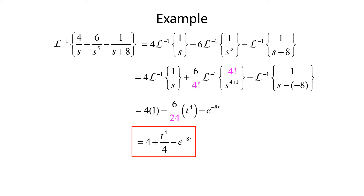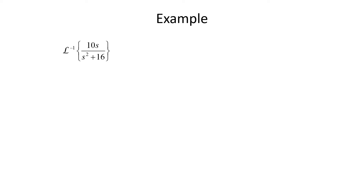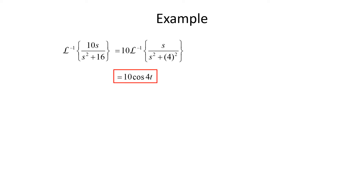Simplifying, we get 4 + t⁴/4 − e^(−8t). For one more example, we have 10s/(s²+16). We pull the 10 outside: 10 times the inverse Laplace of s/(s²+16). We rewrite 16 as 4², giving s/(s²+4²), which matches the cosine formula with k=4. The inverse Laplace transform is 10·cos(4t).